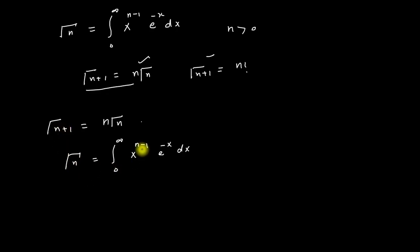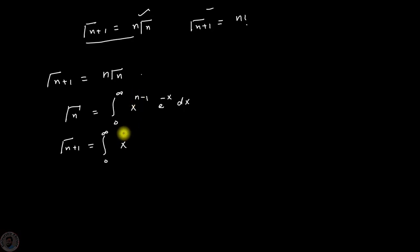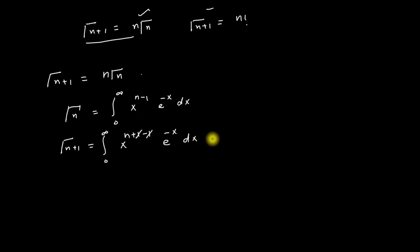Now I am going to replace n by n+1. This equation becomes: Gamma(n+1) equals the integration from zero to infinity of x to the power (n+1 minus 1) times e to the power (minus x) dx. The plus one and minus one cancel each other, giving us the integration from zero to infinity of x to the power n times e to the power (minus x) dx.